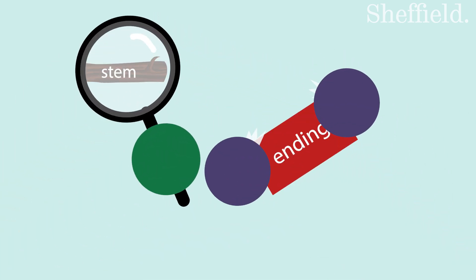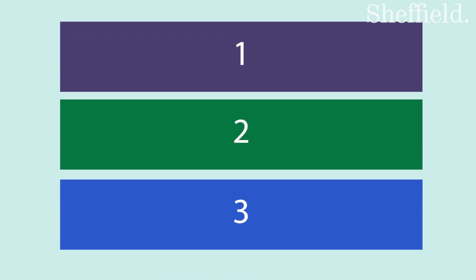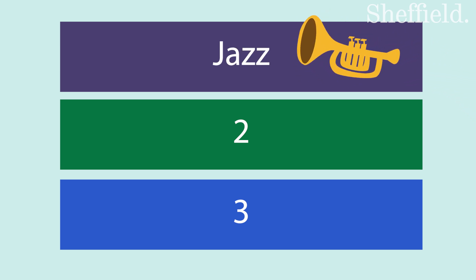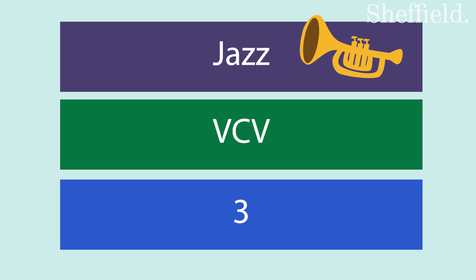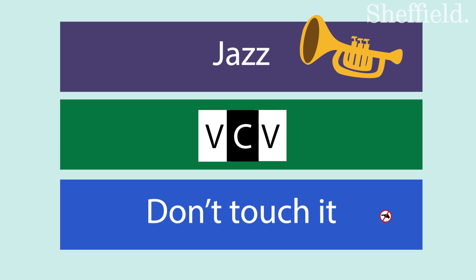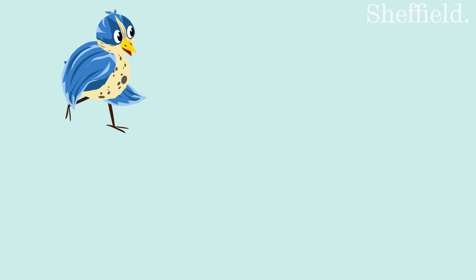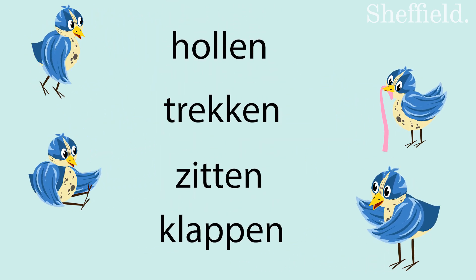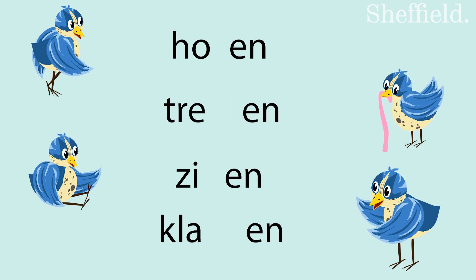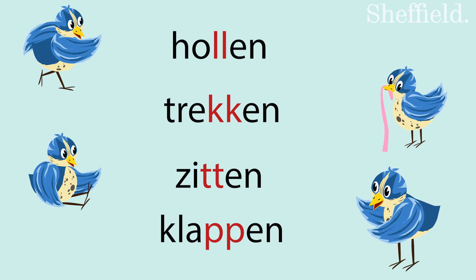Let's go stem-finding and ending-sticking. I will distinguish three types of verbs that require slightly different stem-finding methods, and one bonus category. The jazz category covers verbs that have a double consonant. The VCV category covers verbs that have the pattern vowel-consonant-vowel. And the 'don't touch me' category covers verbs that do not fit any of the other categories. Examples of verbs in the jazz category are hollen, trekken, zitten, klappen — what they share is the same consonant twice before the -en: double L, double K, double T, etc.